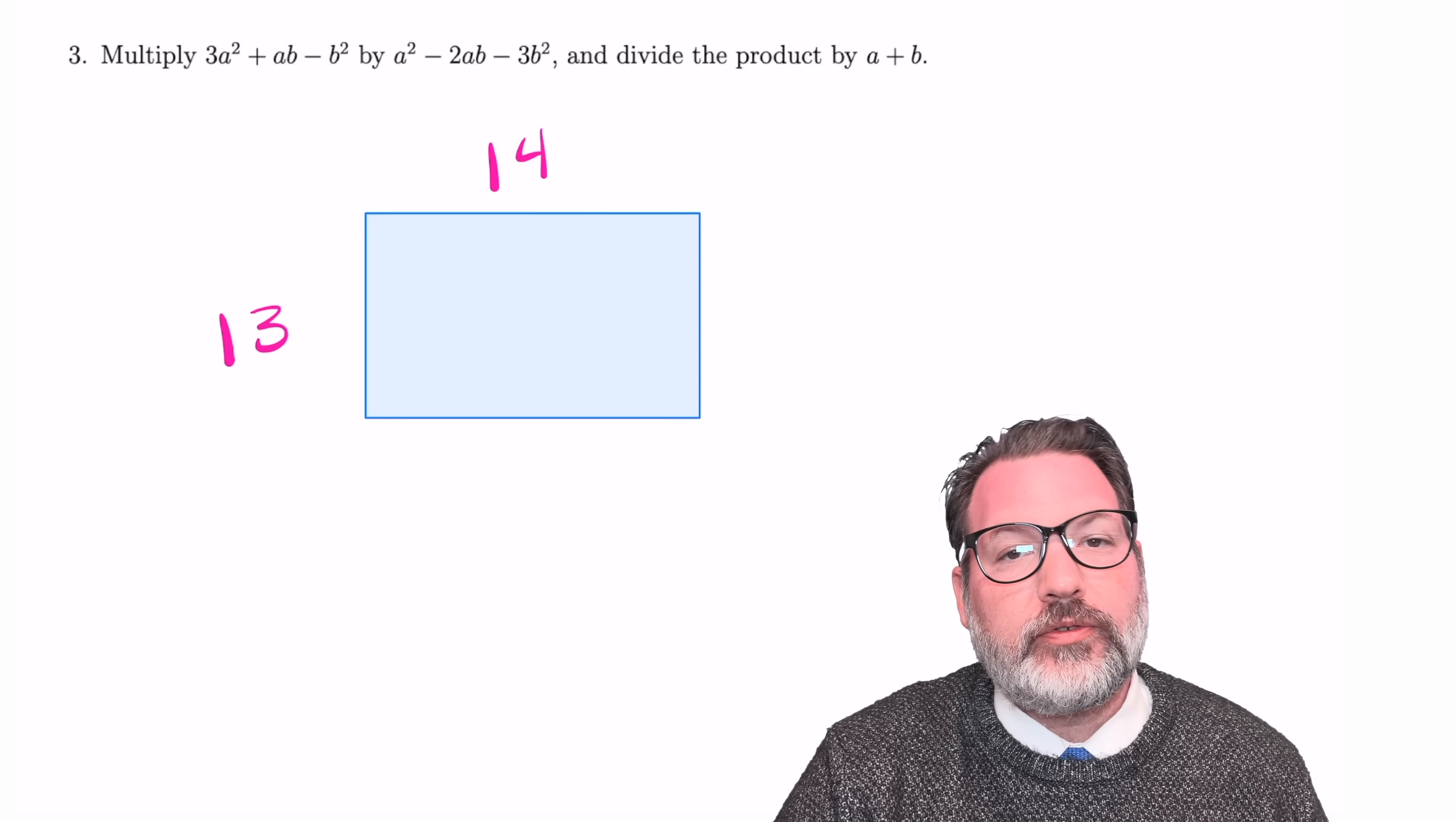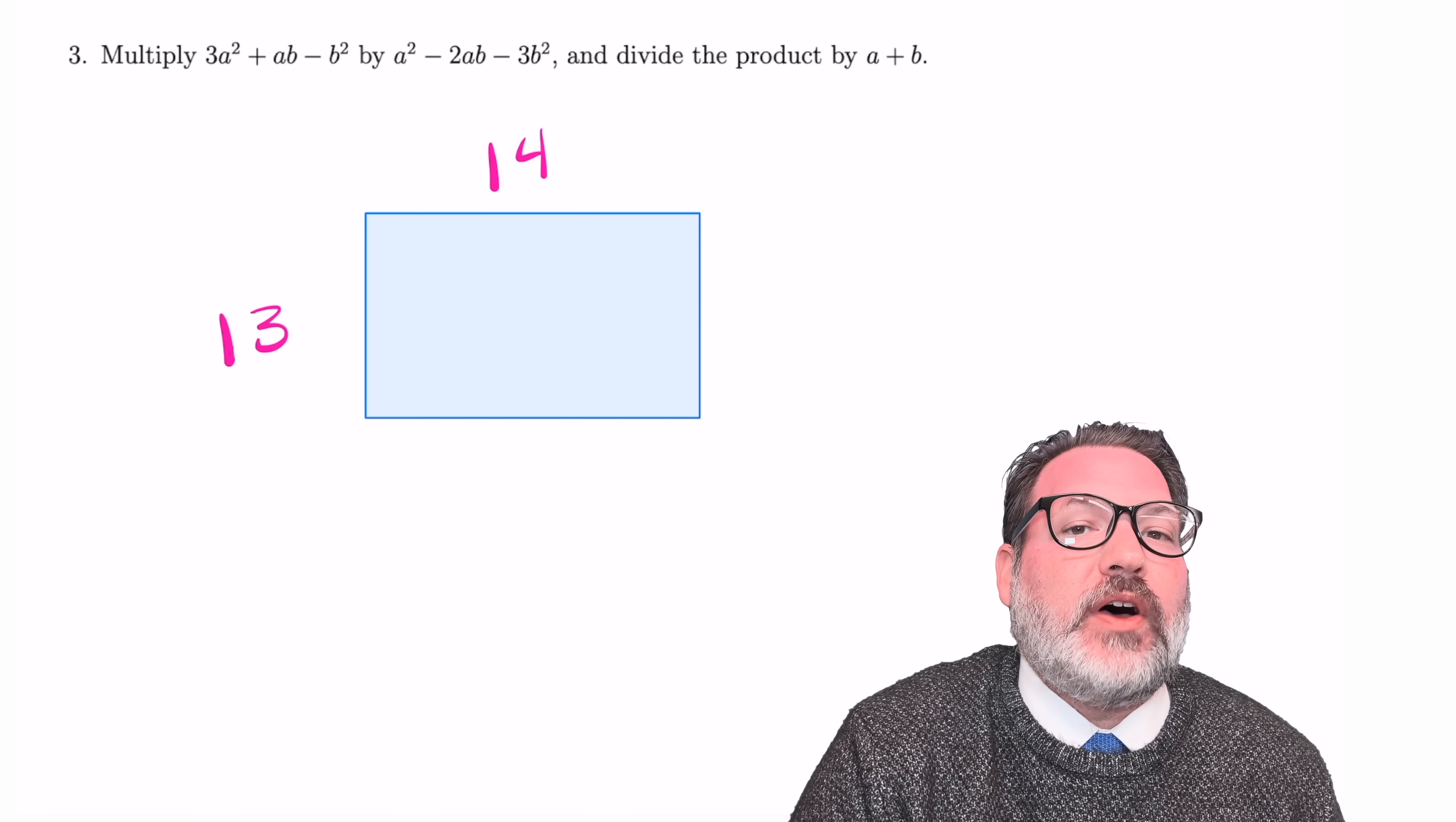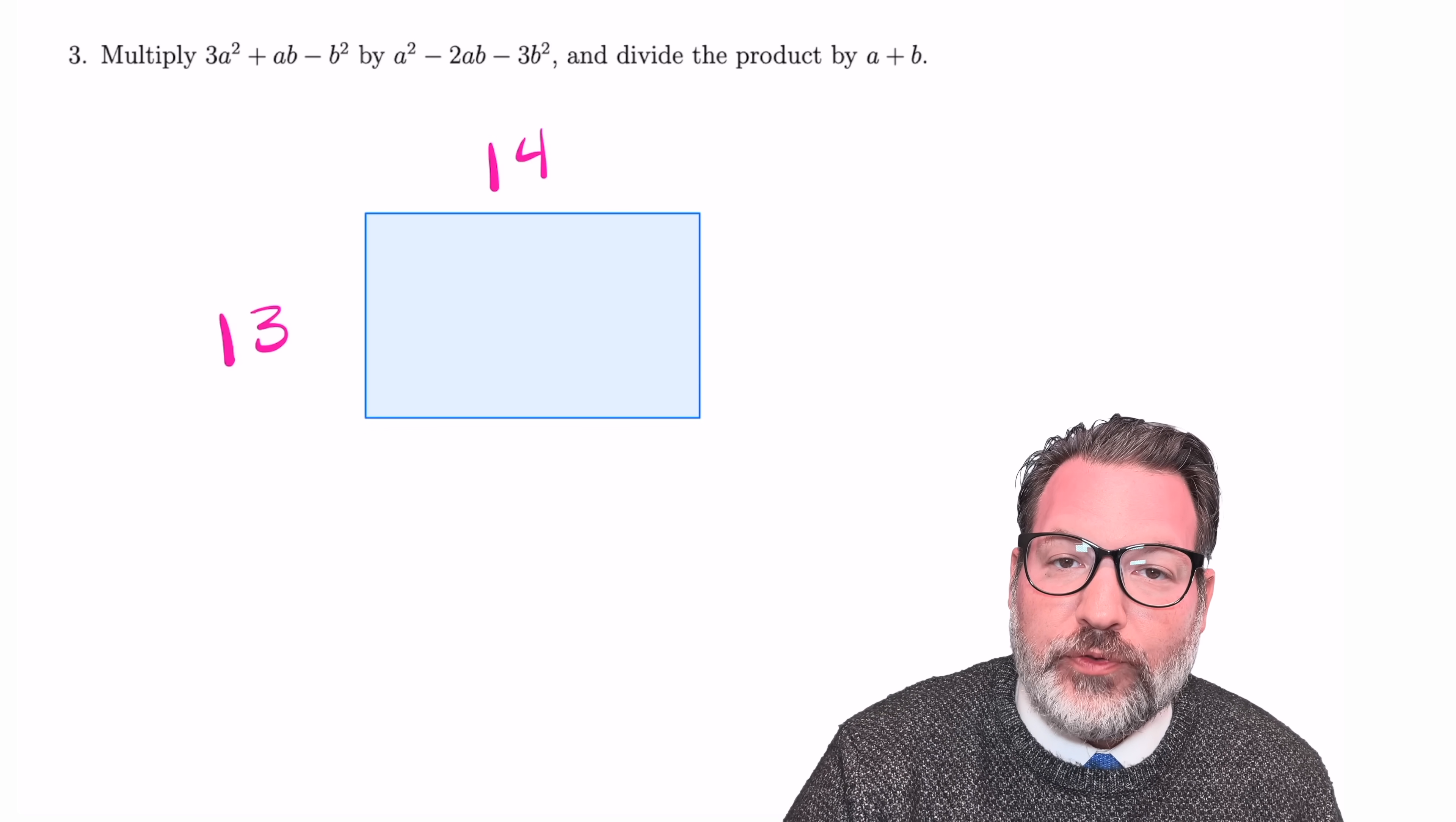and it's in that sense that we think of 3 times 4 as 12. Now, one thing that's nice about the area model for multiplication is that it's extensible. We can do lots of other things with it than simply multiply 3 times 4.